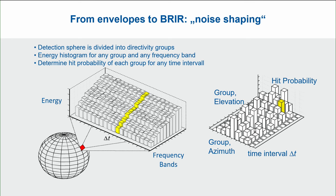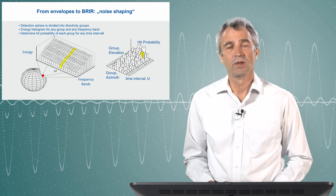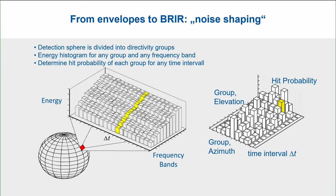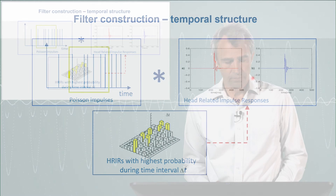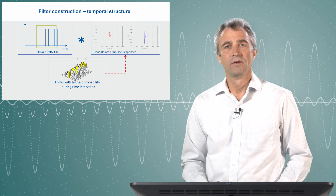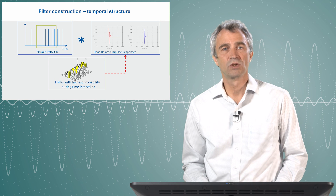The basis for our fine structure creation is the histogram — illustrated here in space, time, and frequency. For each angle in space, each time interval, and each frequency band, we have information about ray counts. We identify the probability of energy coming from a given direction in a certain band and time interval, then take a deterministic noise block — illustrated by a Poisson distribution of impulses — and convolve it with the corresponding direction of incidence of the spatial block. This creates a fine structure inside the temporal block that sounds as authentic as possible with respect to the energy envelope.